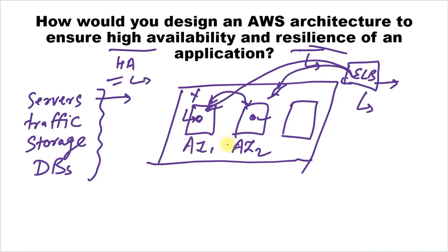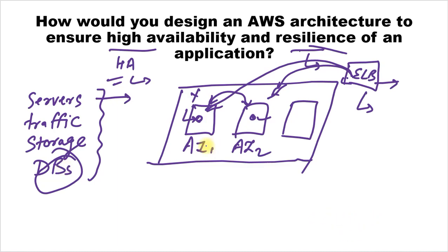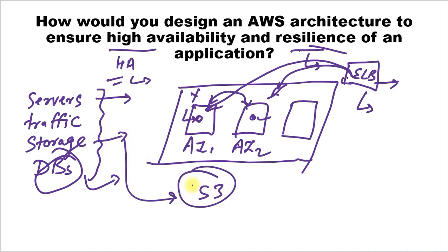When databases come into the picture, we should use Amazon RDS because it provides redundancy and automatic backup. If one instance of the database goes down, we can use another one automatically. For storage, we should keep our data in S3 for data backup and store that backup in multiple availability zones so we can access it whenever needed. For normal traffic routing, we should use DNS failover.